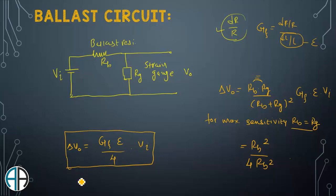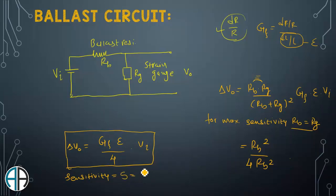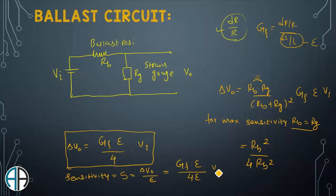If we define sensitivity S as the ratio of maximum change in output voltage to the applied strain, then S equals (GF·ε/4·Vi) divided by ε, which simplifies to S equals (1/4)·GF·Vi. This is the final equation for the maximum sensitivity of the ballast circuit.